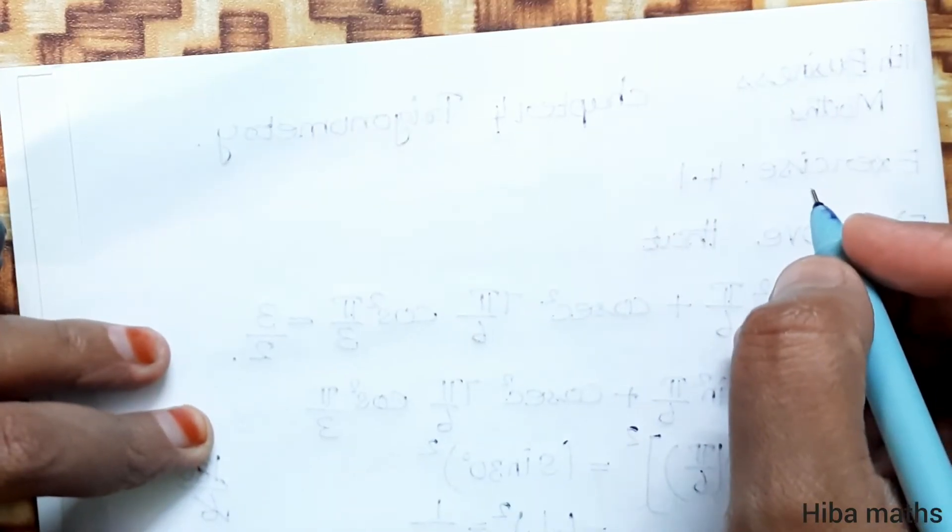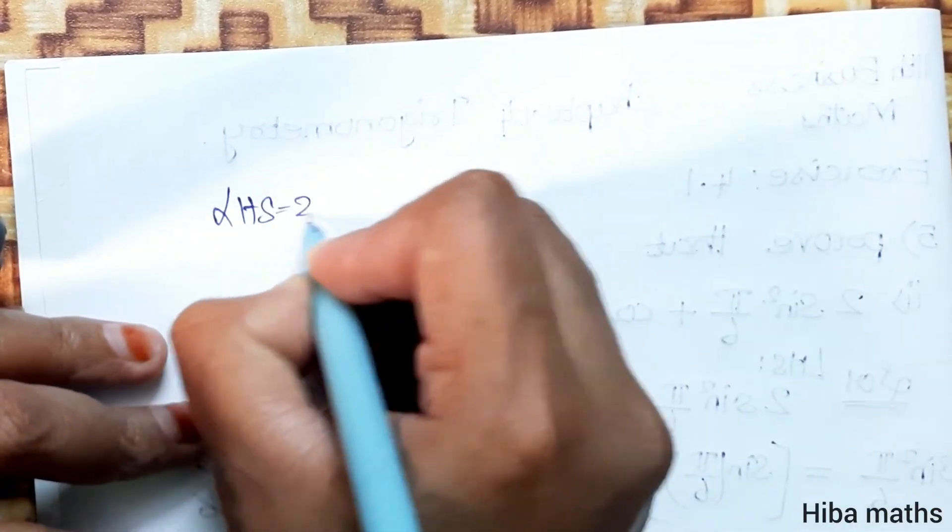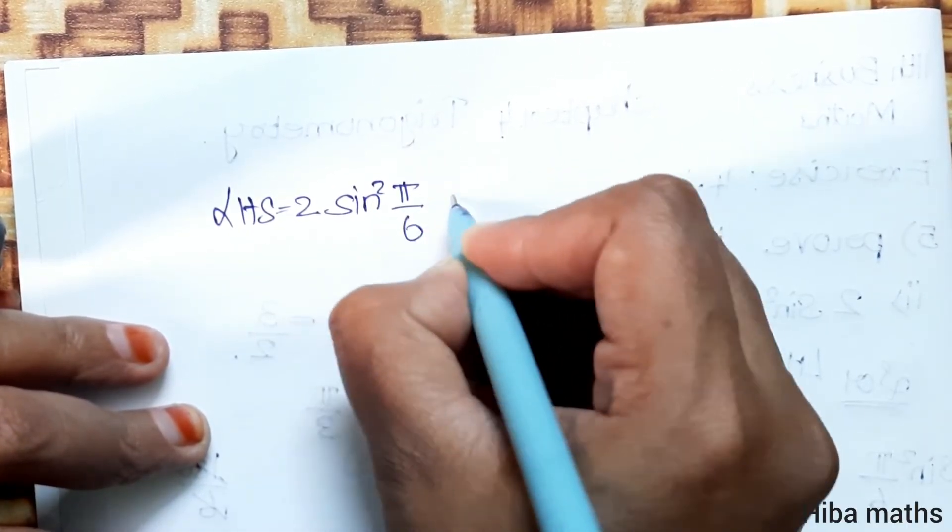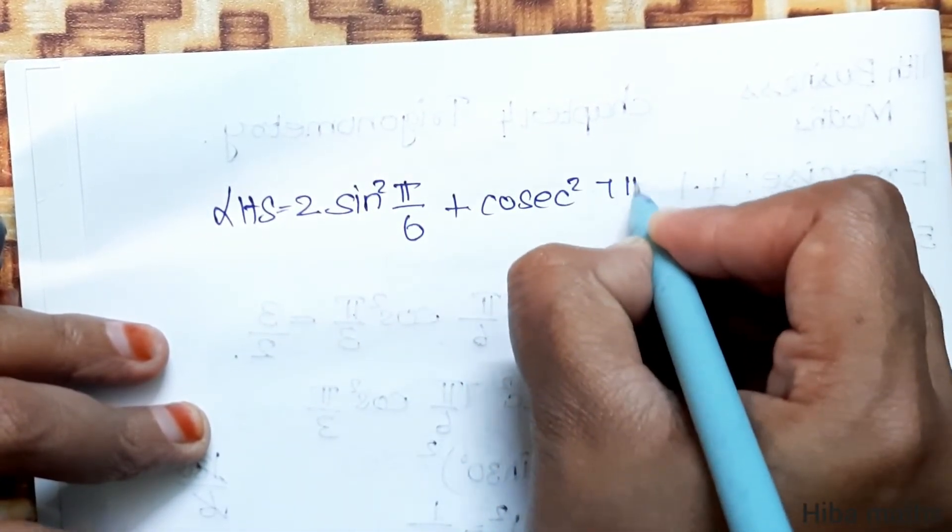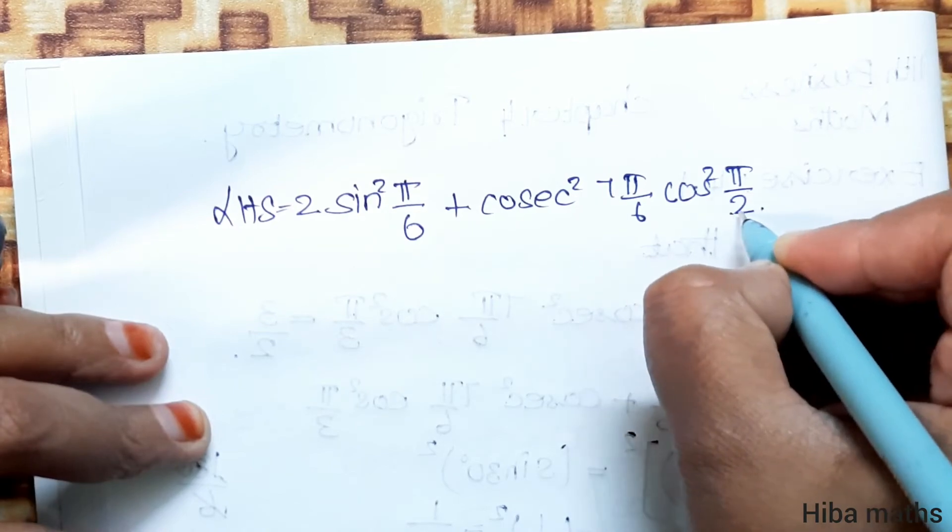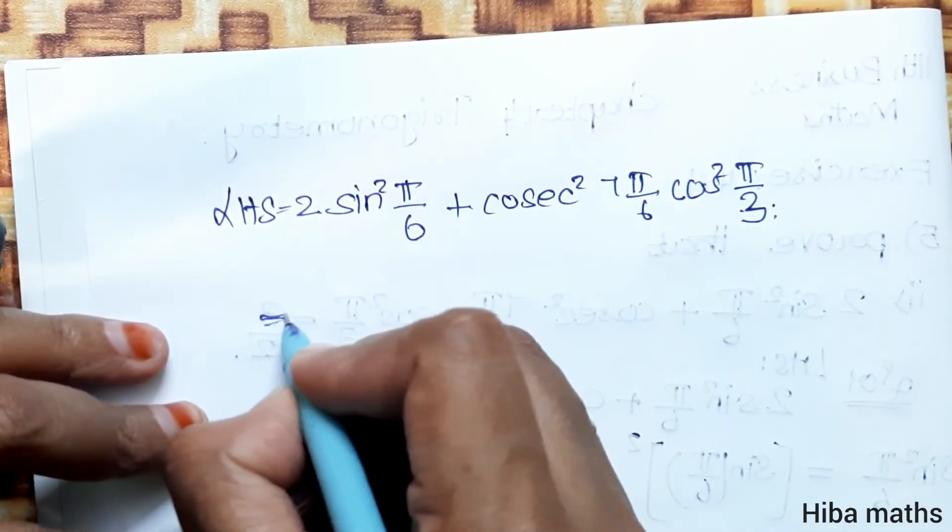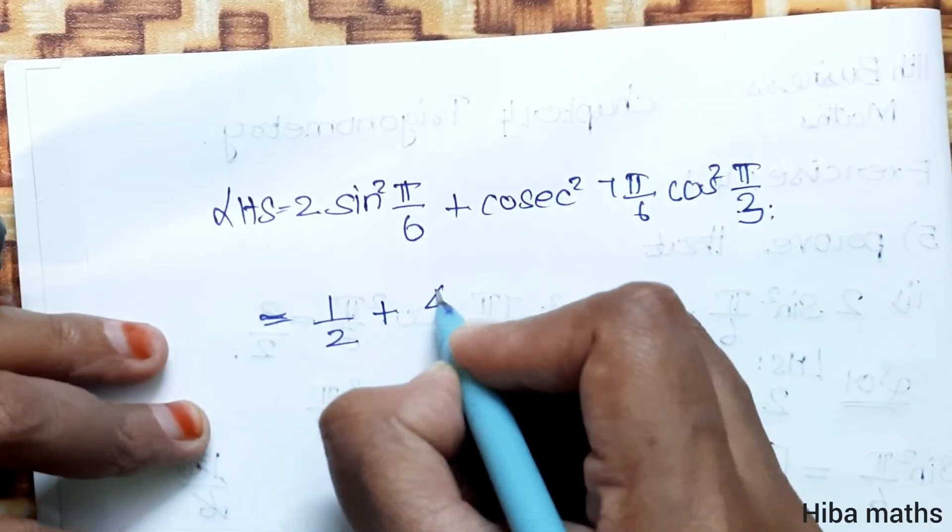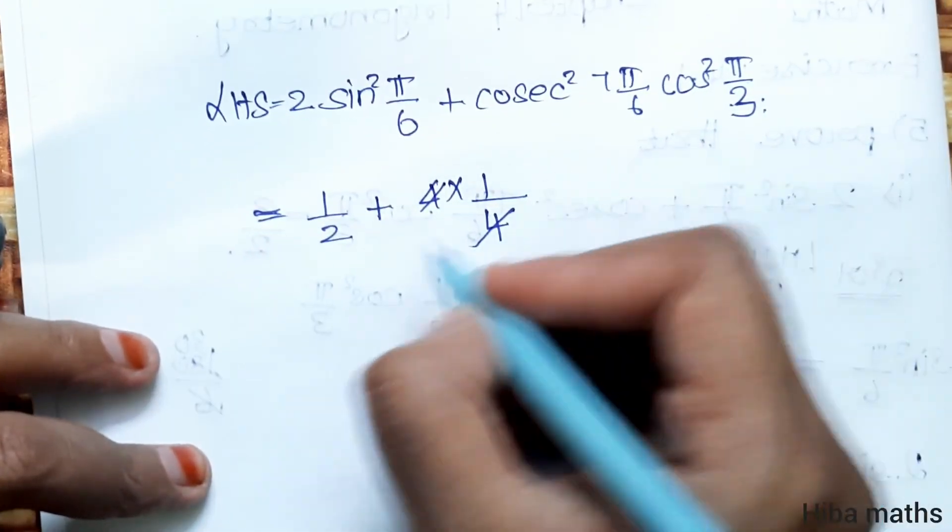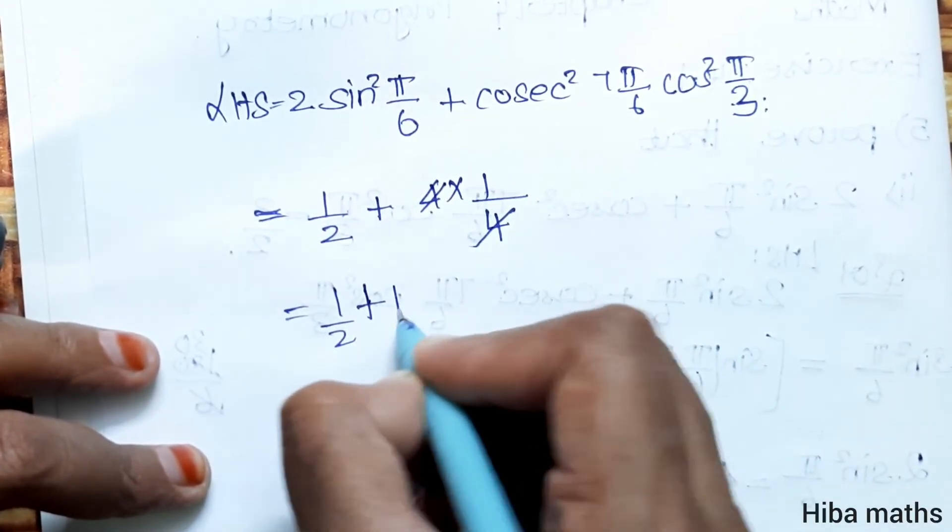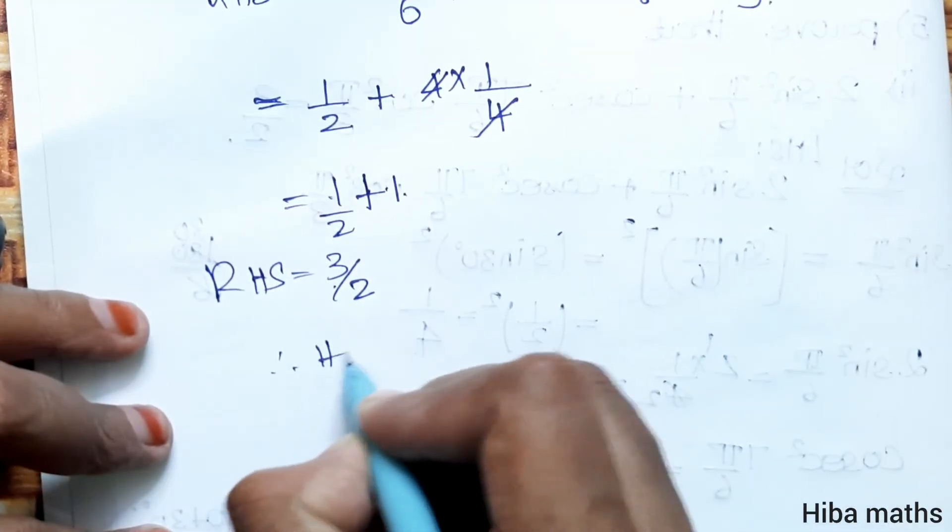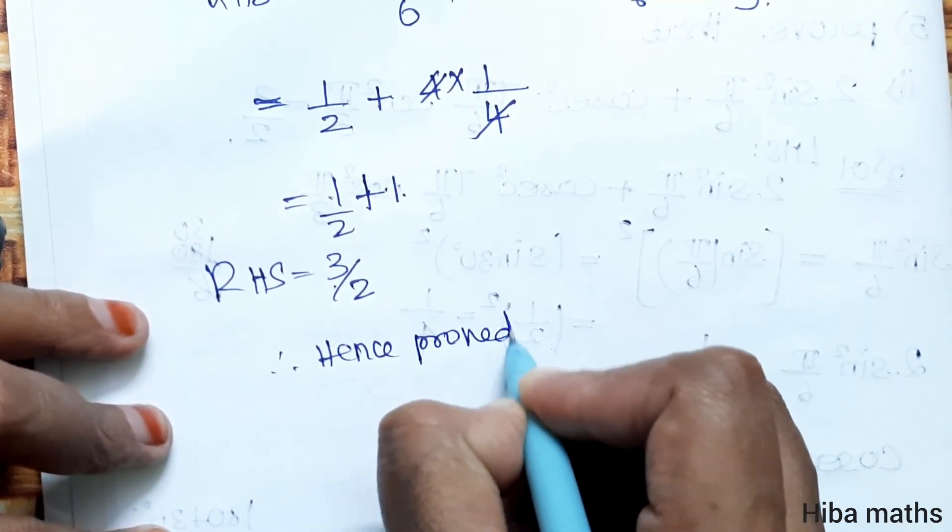So we have 1/2 + 4 × 1/4. 4 and 4 cancel, giving 1/2 + 1. 2 and 2 gives 2 plus 1 equals 3, so 3/2. This is the RHS, hence proved.